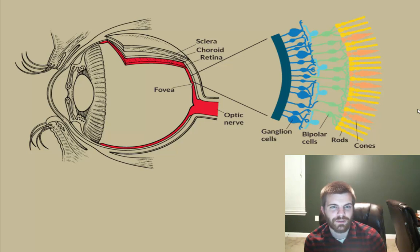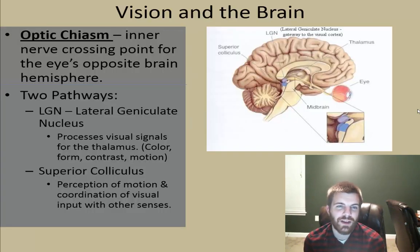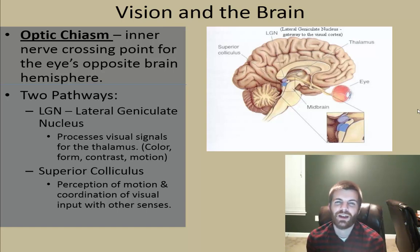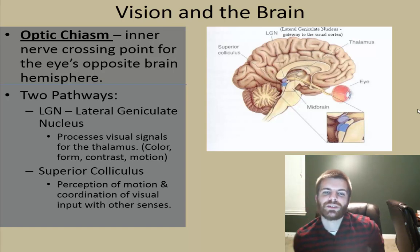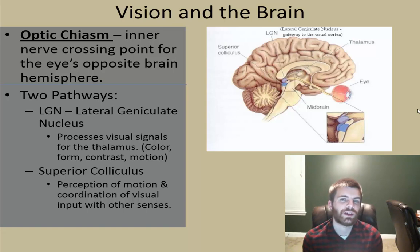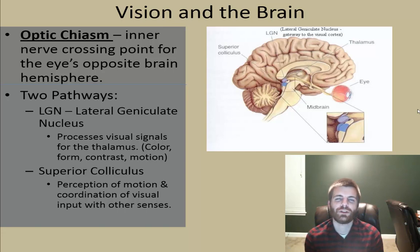Within the brain, information reaches a crossing point to reach different brain hemispheres — this is called the optic chiasm, the inner nerve crossing point for the eyes to reach the opposite brain hemisphere. Once information reaches the optic chiasm it may travel two pathways: the LGN (lateral geniculate nucleus), which processes visual signals for the thalamus including color, form, contrast, or motion; or the superior colliculus, which is involved in the perception of motion and coordinating visual input with other senses, like movement to dodge something headed your way.